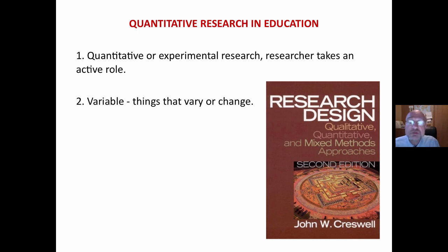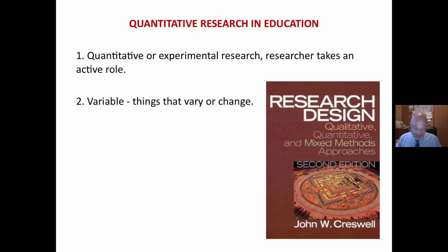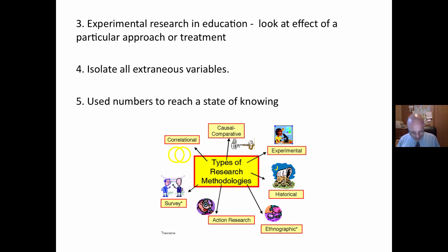Quantitative research, or experimental research, is what we most commonly think about when we think of research. Here, the researcher takes an active role and sets up a type of observation or experiment in order to isolate a variable. In experimental research, the goal is to figure out what the effect of a particular approach or treatment variable might be in order to make an accurate prediction or demonstrate a causal relationship — that one thing causes the other.